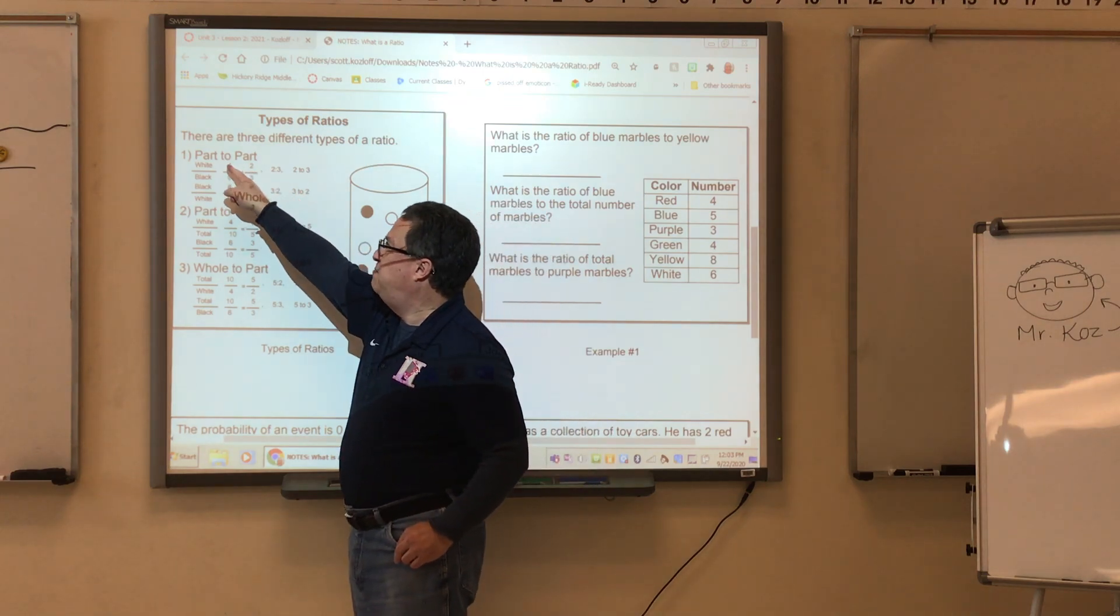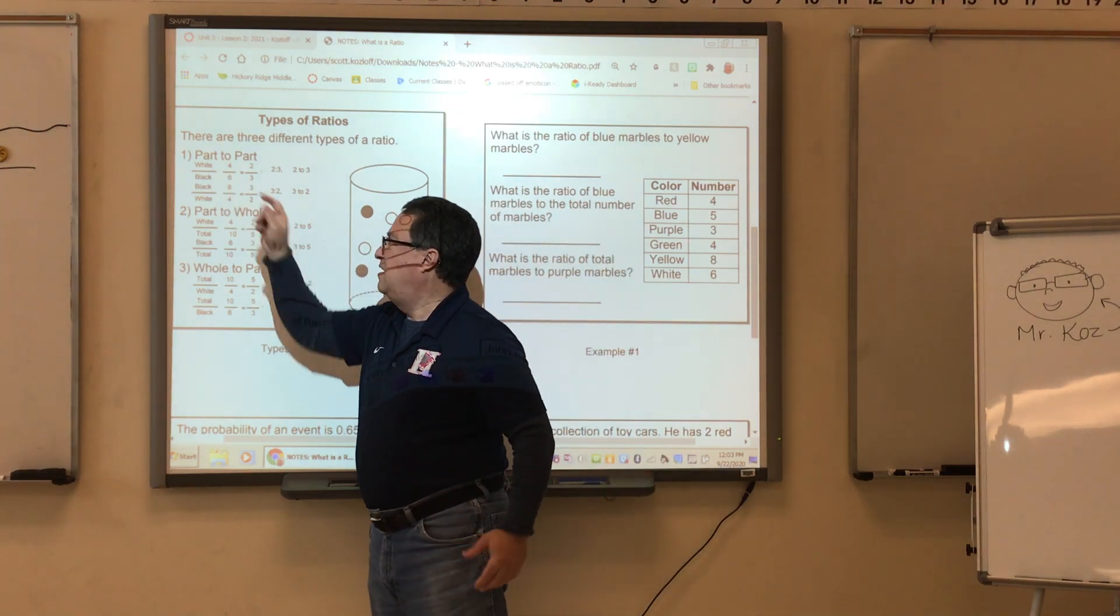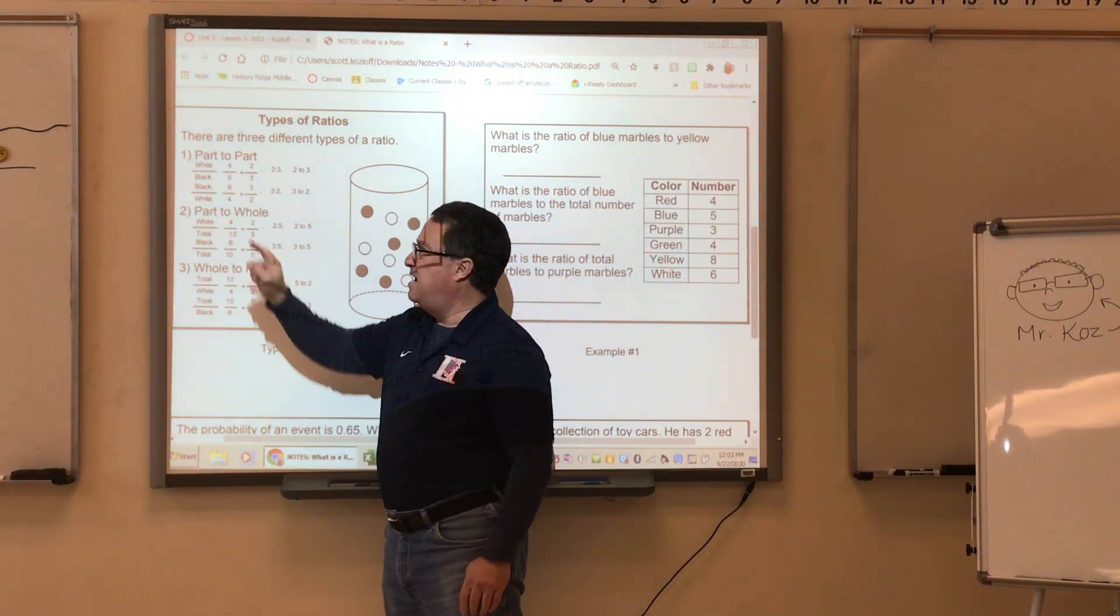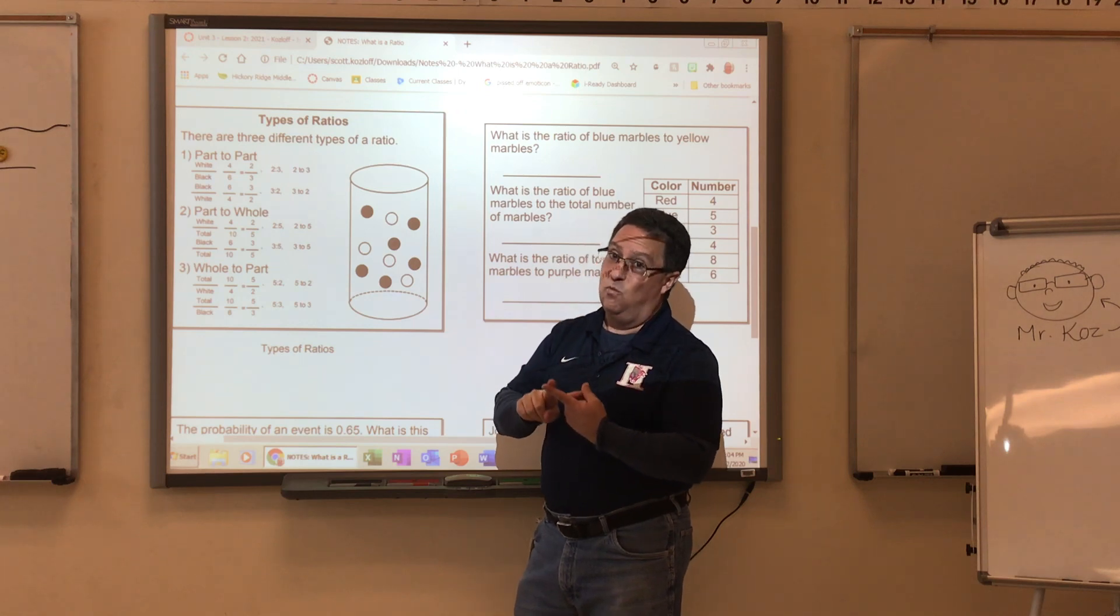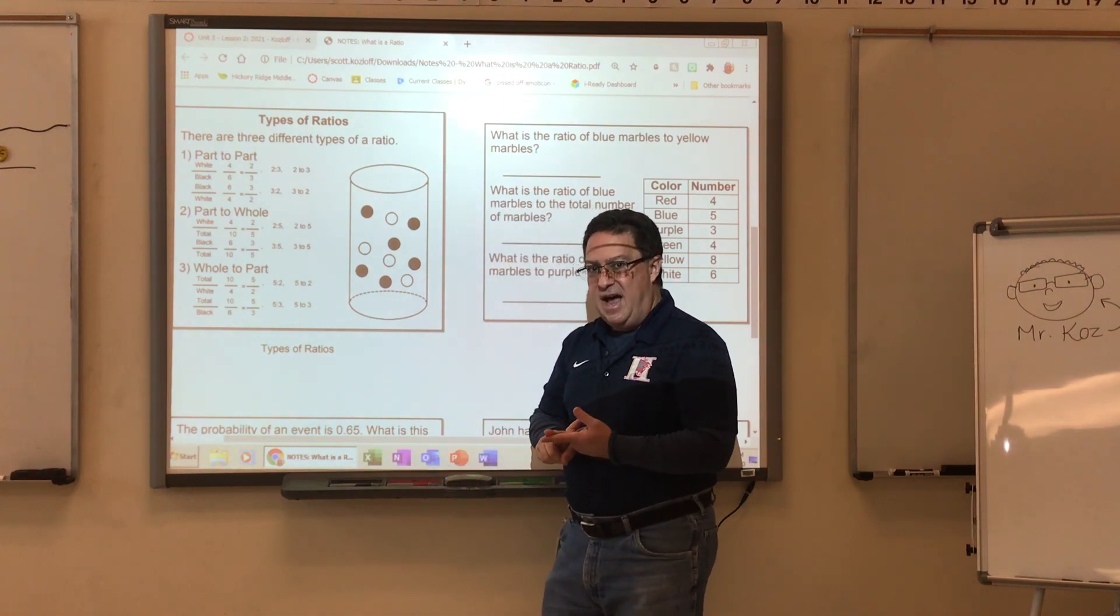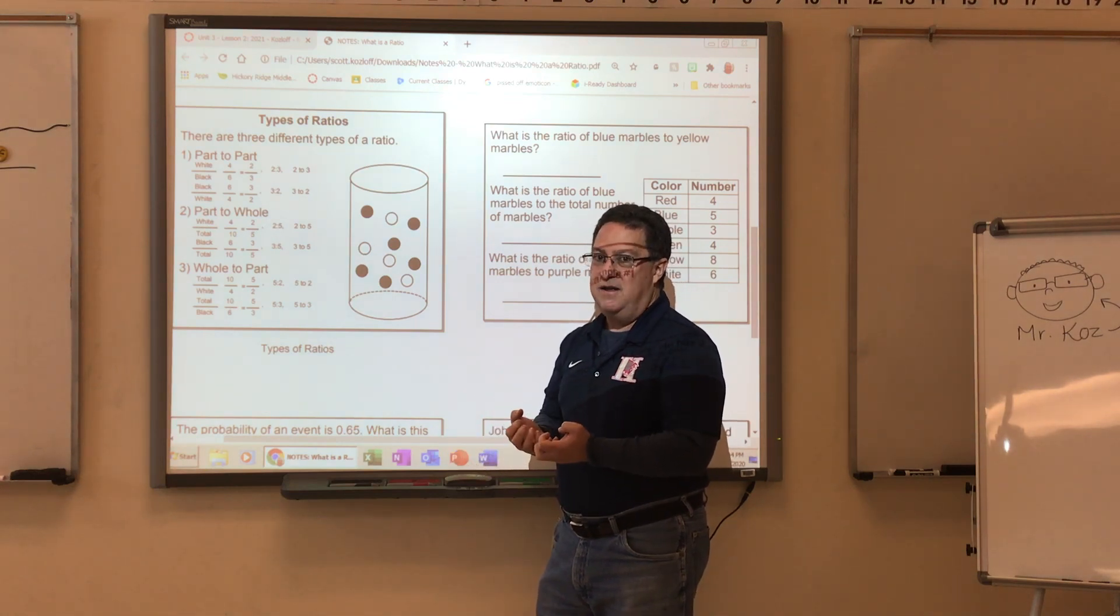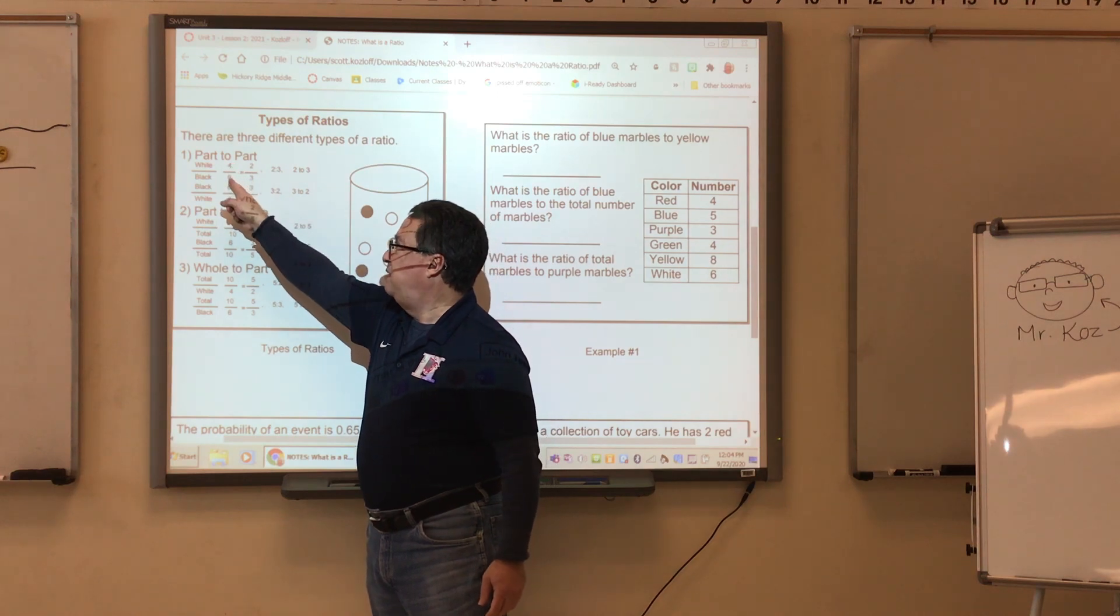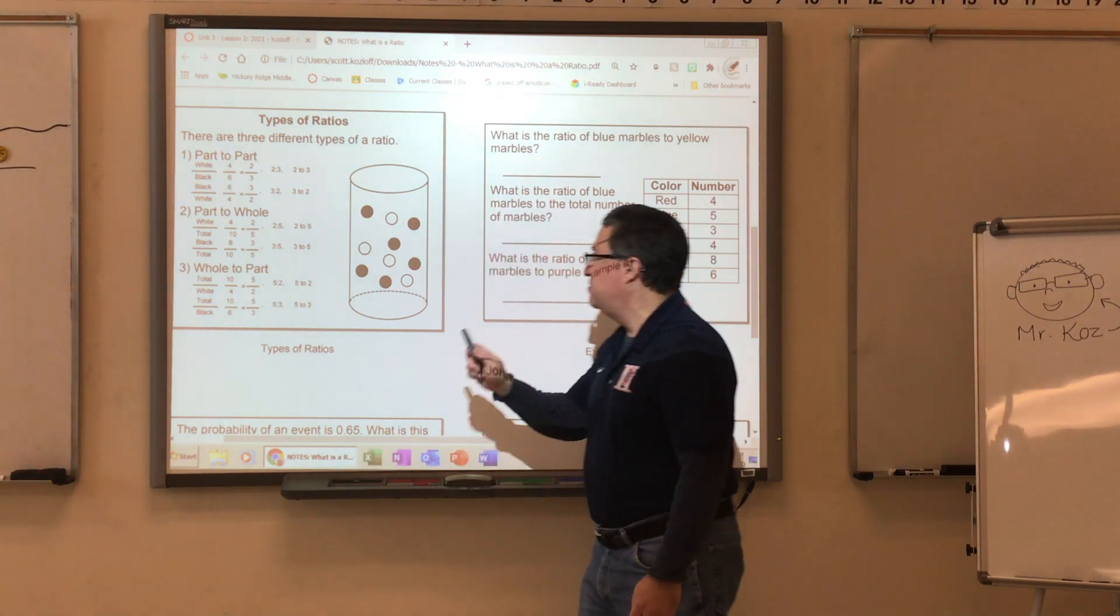If I ask you which part to which part, then I'm asking you about the white marbles and the black marbles. If I ask you what is the ratio of white marbles to black marbles, then the white marbles go on top, the black marbles would go on the bottom. If I ask you what is the ratio of black marbles to white marbles, that reverses the order. So whatever way you're being asked, that's the way you have to write it because it changes depending on which one you say or do first. So white to black, black to white. And then you notice that 4 over 6 can be simplified.